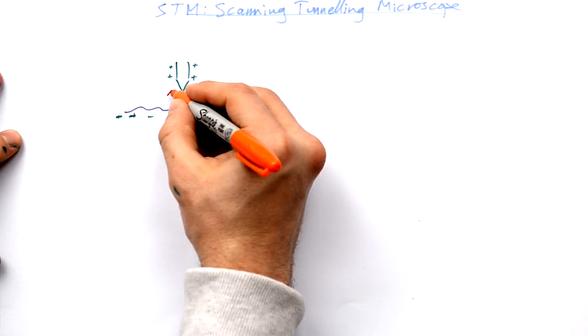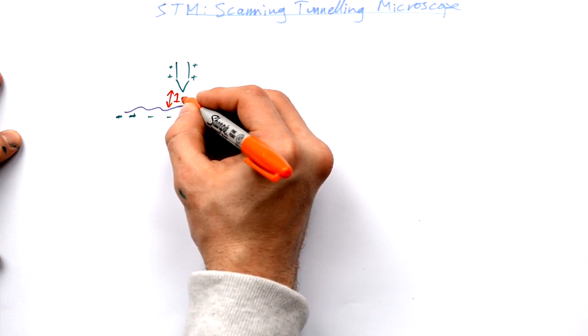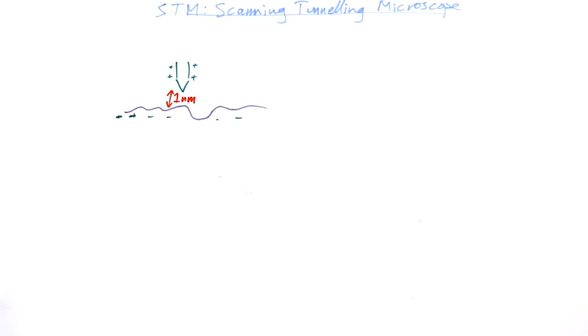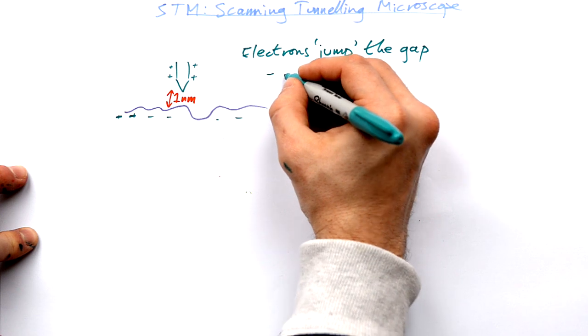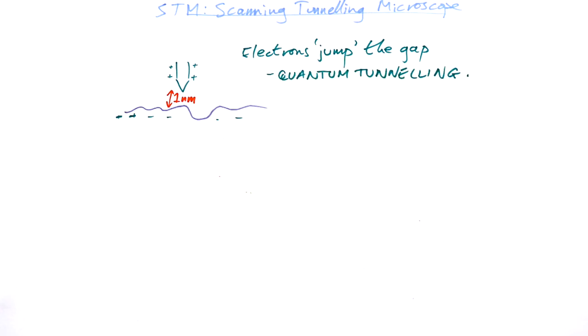Now normally the surplus electrons on the sample here shouldn't be able to jump to that probe. But when you get this distance to the order of about one nanometer, you do actually get electrons jumping the gap. And we call that quantum tunneling. So they're doing something that classically they shouldn't be able to do.